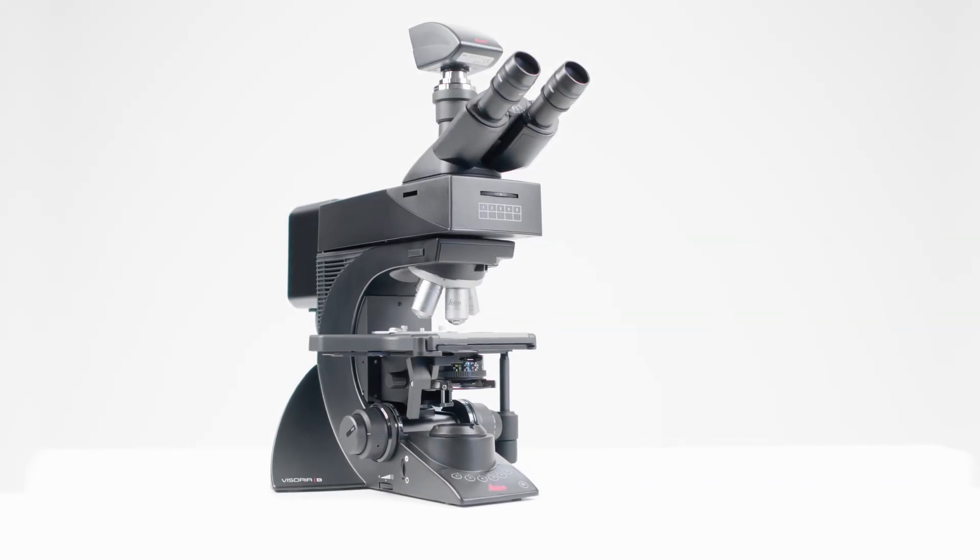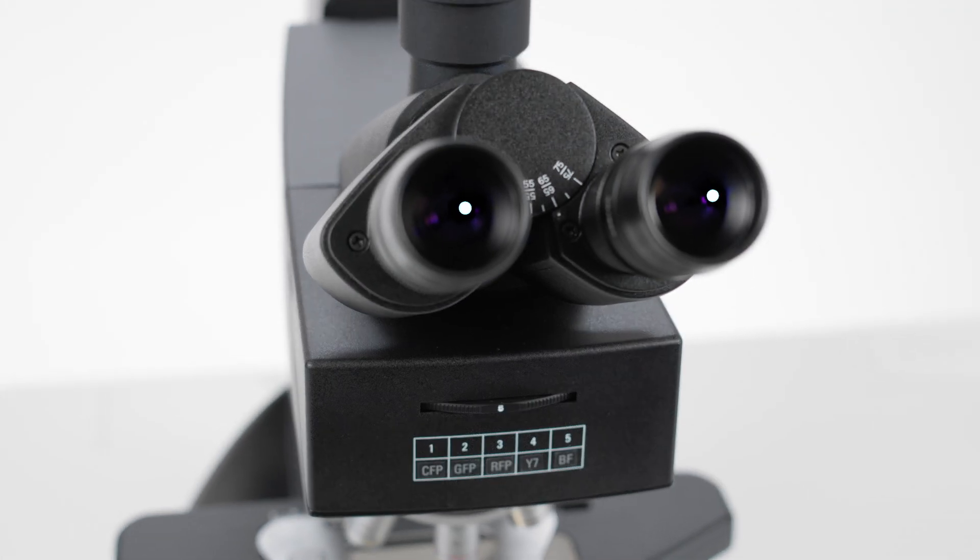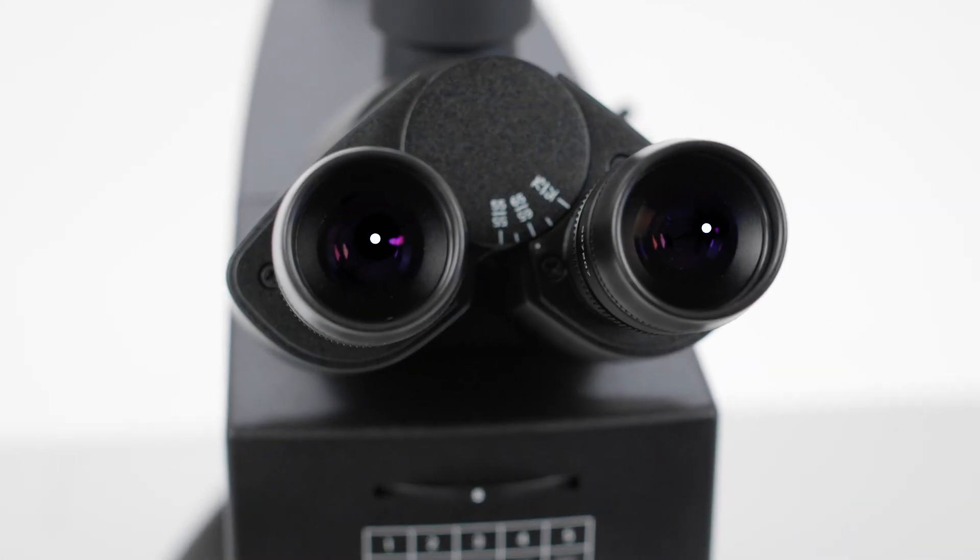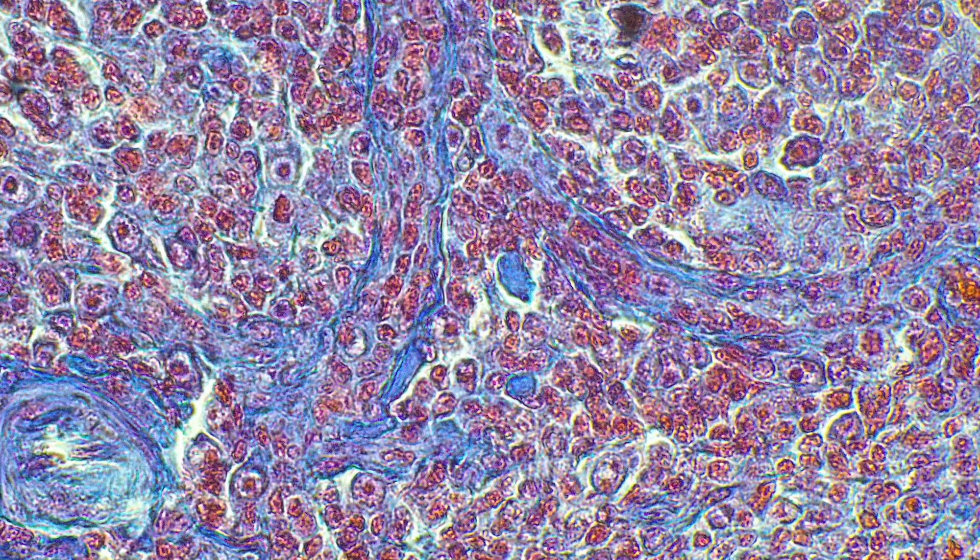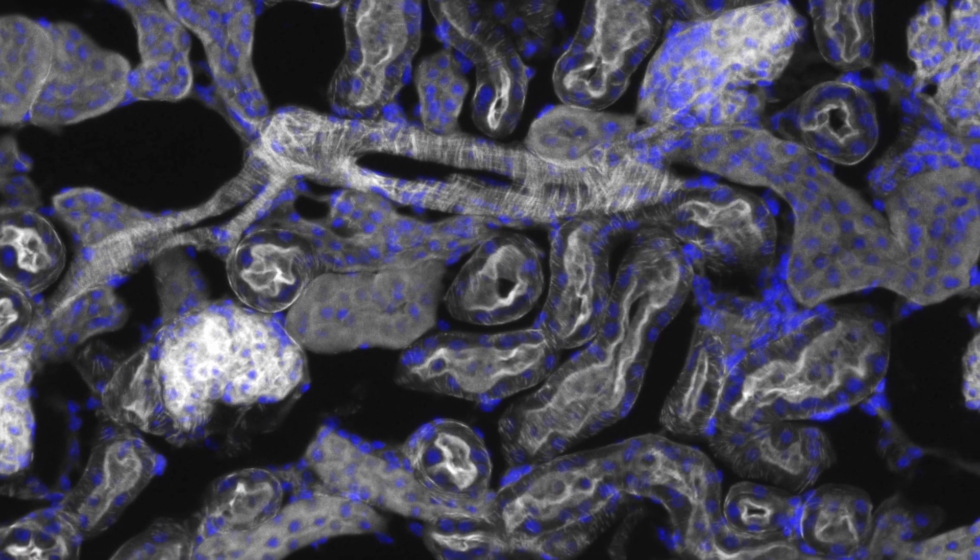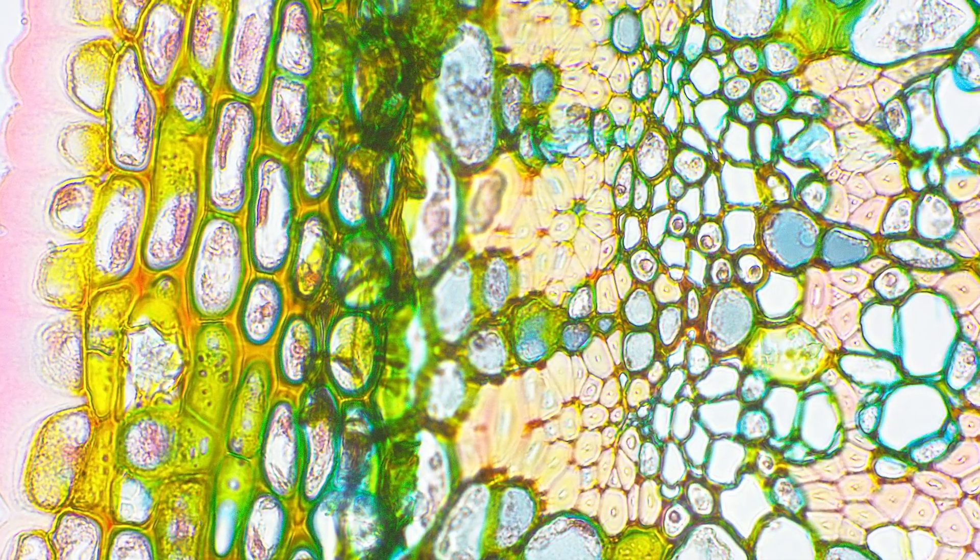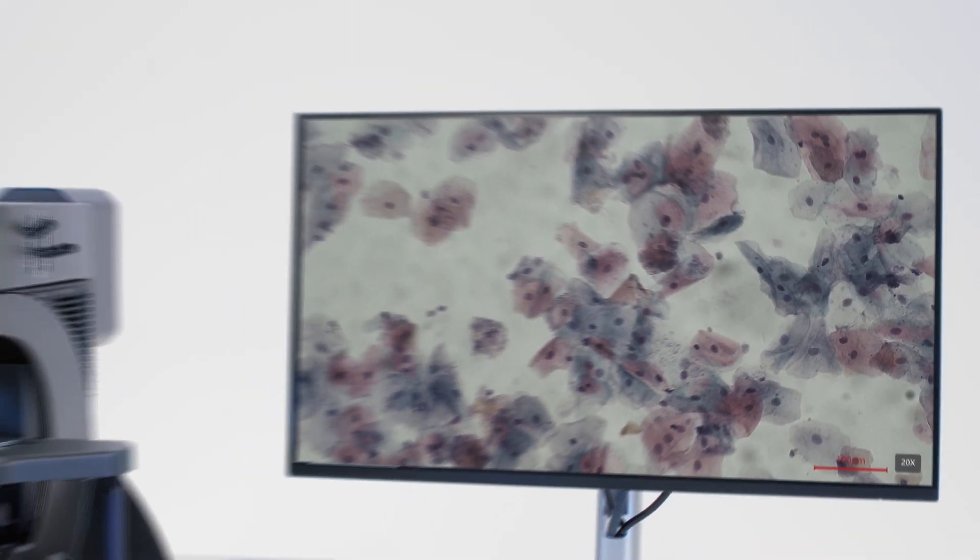The Visoria B Microscope is a solution designed for applications performed in life science and clinical laboratories. Made for your daily routine in life science studies including human and animal histology, plant anatomy and pathology examinations.